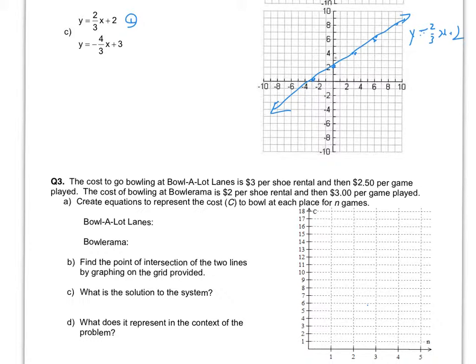So I could start here at 3, and I could fall 4, 1, 2, 3, 4, and run 3 to the right, 1, 2, 3, there we are